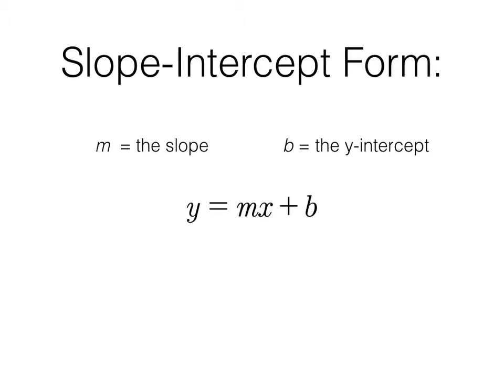Slope-intercept form is y equals mx plus b. Let's make the lightsaber green this time. So y equals mx plus b. What is m? M is the slope. It's the coefficient of x in the equation. B right here is the y-intercept. Why they use m, why they use b? I think really the reasoning behind a lot of this is the first mass-produced math books used m for slope and b for y-intercept.